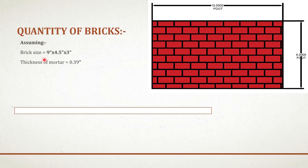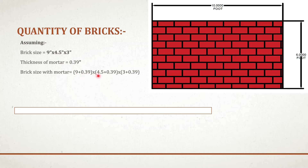So if you add this thickness of mortar to the brick size, then you will get the exact number of bricks. Therefore, brick size with mortar equals to 9 inch plus 0.39 inch by 4.5 inch plus 0.39 inch by 3 inch plus 0.39, which equals to 9.39 inch by 4.89 inch by 3.39 inch.